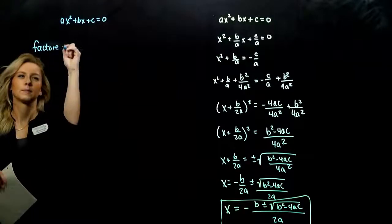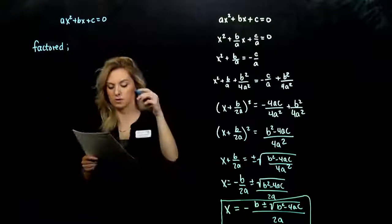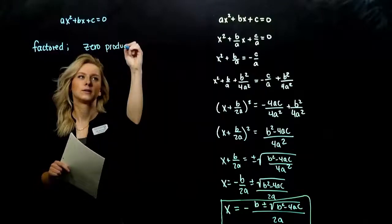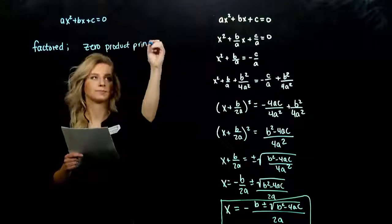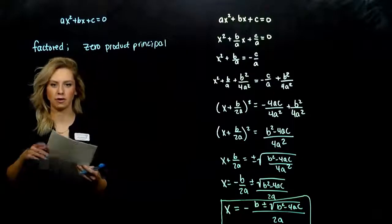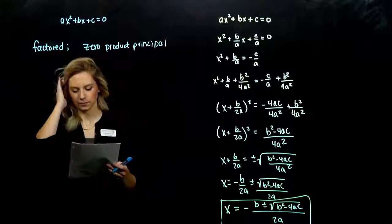and then we used that zero product principle to be able to solve. So if two things are being multiplied and it's equal to zero, either the first piece is zero or the second piece goes to zero.